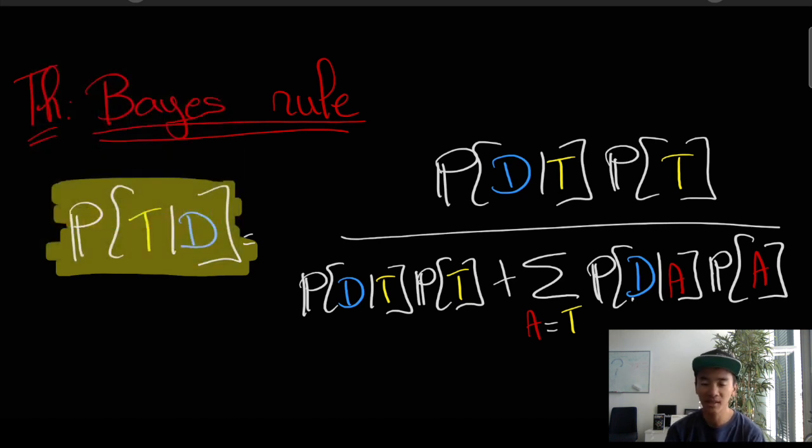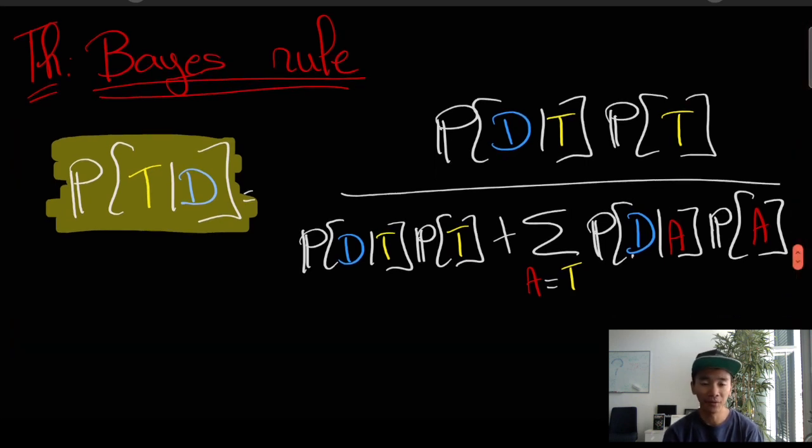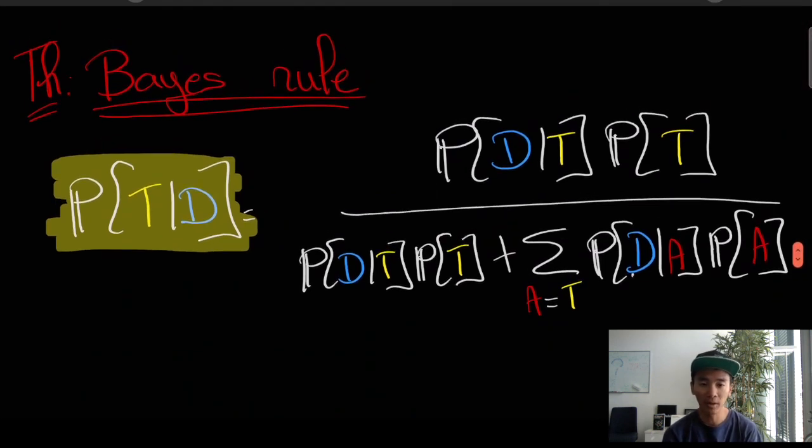It's a probability of a theory which is something that may sound a bit weird because you might think that some theories are true, others are false. So, why would we talk about probabilities of theories?